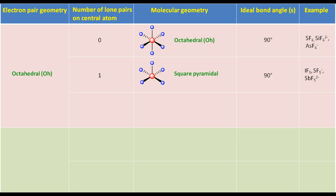For a molecule with octahedral electron pair geometry having two lone pairs on the central atom, we will put the lone pairs on the axial position because the number of electron pairs is even. Ignoring the lone pairs will result in square planar molecular geometry. The ideal bond angle is 90 degrees.